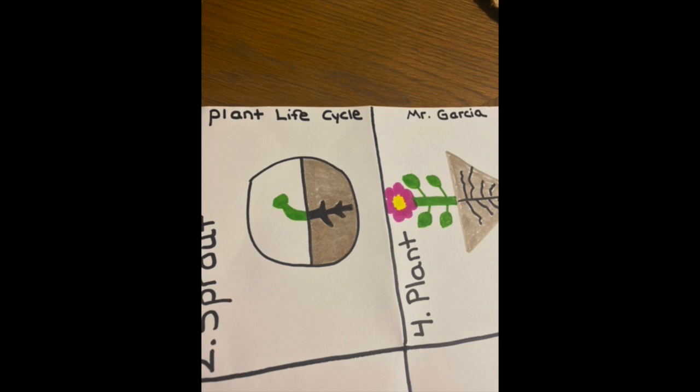The very last thing we have to do is write a title and our name. I turn my page to the side. As you can see, I wrote 'plant life cycle.' Plant is P-L-A-N-T, life is L-I-F-E, cycle is C-Y-C-L-E. Then I wrote my name.